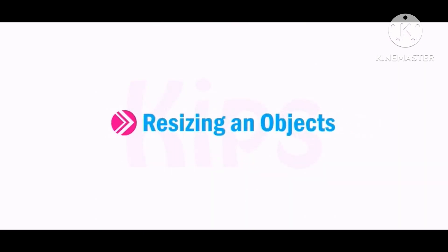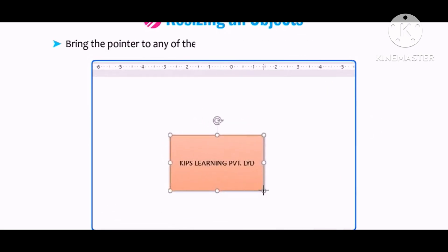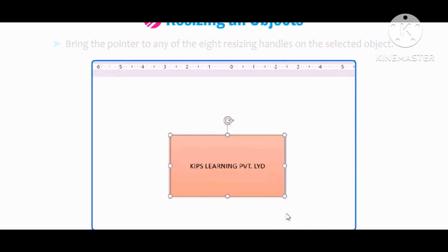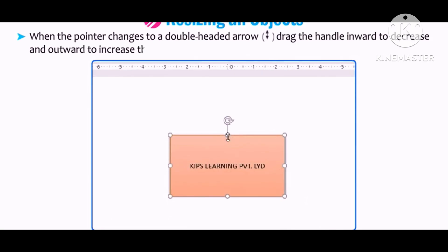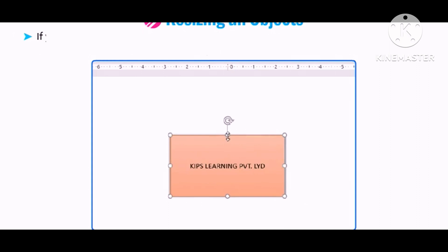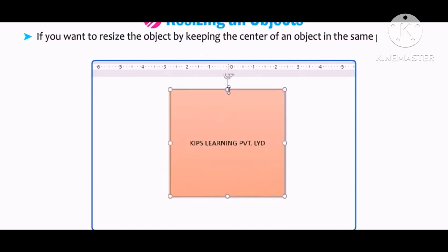Let us learn how to resize an object. Select the object you want to resize. Bring the pointer to any of the eight resizing handles on the selected object. When the pointer changes to a double-headed arrow, drag inward to decrease or outward to increase the size. If you want to resize while keeping the center in the same place, hold down the Ctrl key as you drag.